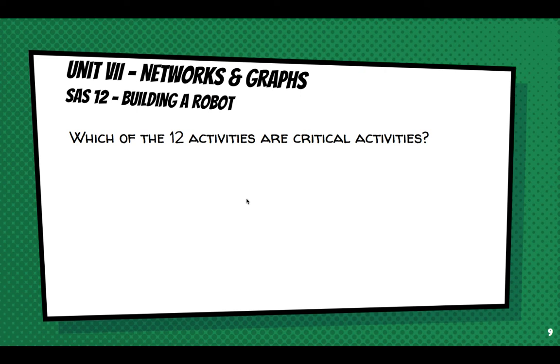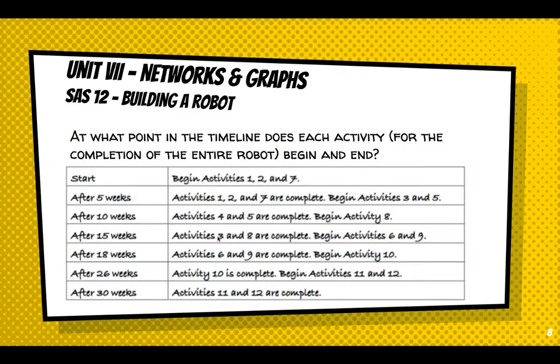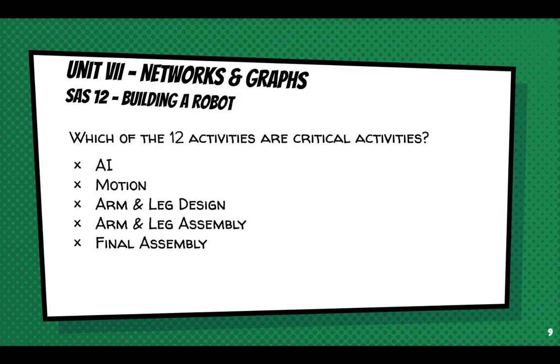First of all, we need to define what a critical activity is. A critical activity is an activity, if delayed, would possibly affect the minimum time of completion. So what were the activities on the minimum time of completion pathway? Let's go back and look. We said AI, M, ALD, ALA, and FA. The minimum time of completion lies on that pathway. So all five of these activities are considered critical activities. Yep. There you go. There's the five activities.